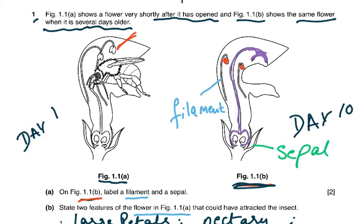Read the question very carefully. On figure 1.1b, label a filament and a sepal. Sepals are the green parts which protect the flower in the bud stage. The anther and the filament make up the stamen, so they asked you to label the filament and the sepals.